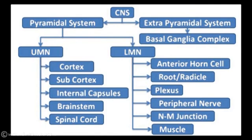To summarize the approach: the CNS is grossly divided into the pyramidal system and the extrapyramidal system. The pyramidal system is the main system, while the extrapyramidal system — also called the accessory system — consists of the basal ganglia complex. The pyramidal system is further subdivided into upper motor neuron and lower motor neuron. The upper motor neuron consists of the cortex, subcortex, internal capsule, brain stem, and spinal cord.